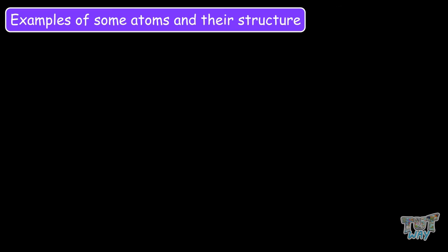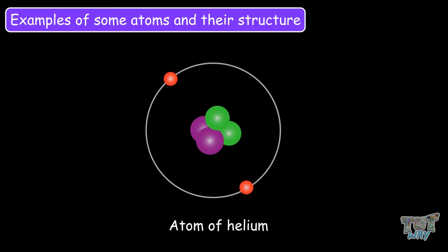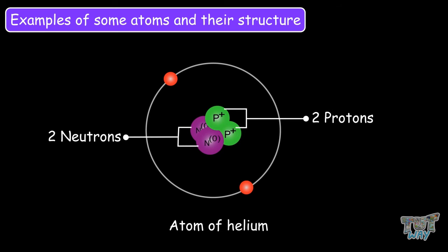Let's have examples of some atoms and their structure. This is the helium atom. Helium has two protons and two neutrons in its nucleus, and its electron cloud has two electrons.